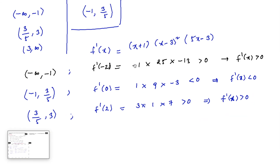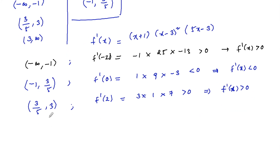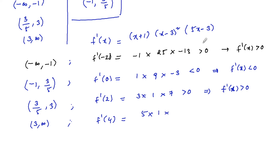In the last interval (3, +∞), take x = 4: f'(4) = (5) · (1) · (17) = 85, which is positive. So f'(x) > 0 here as well, confirming the function is increasing on (3, +∞).